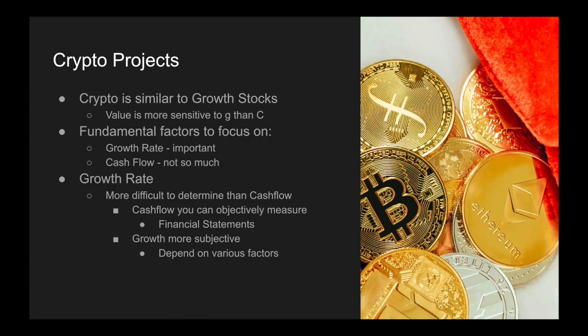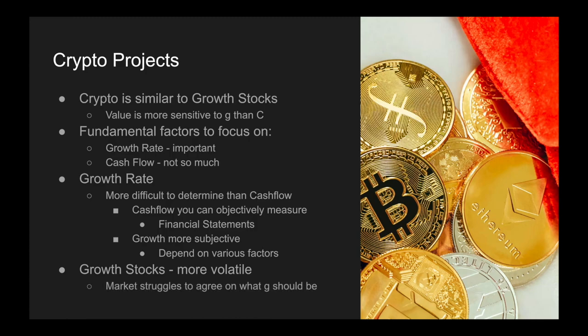The reason growth is subjective is because it depends on various factors — each industry will have its own set of fundamental factors influencing what the growth should be. Because of that, everyone has different opinions on growth, and growth stocks — including crypto projects — tend to be more volatile because the market struggles to agree on what that G value should be. Remember, in our discounted cash flow model, I is the interest rate and the large chunk comes from the Fed rate, and the cash flows come from financial statements. So those two values you can at least see and plug into the formula. However, the growth parameter is a lot more difficult to determine.